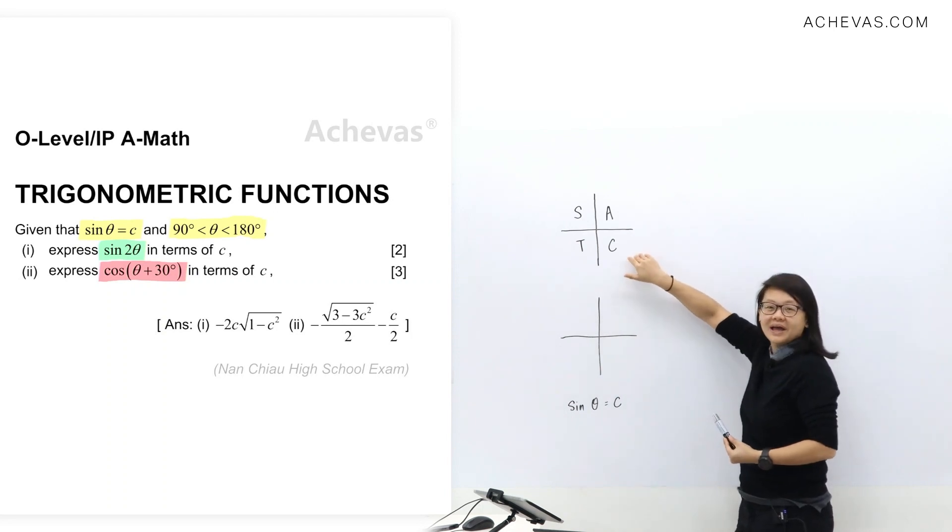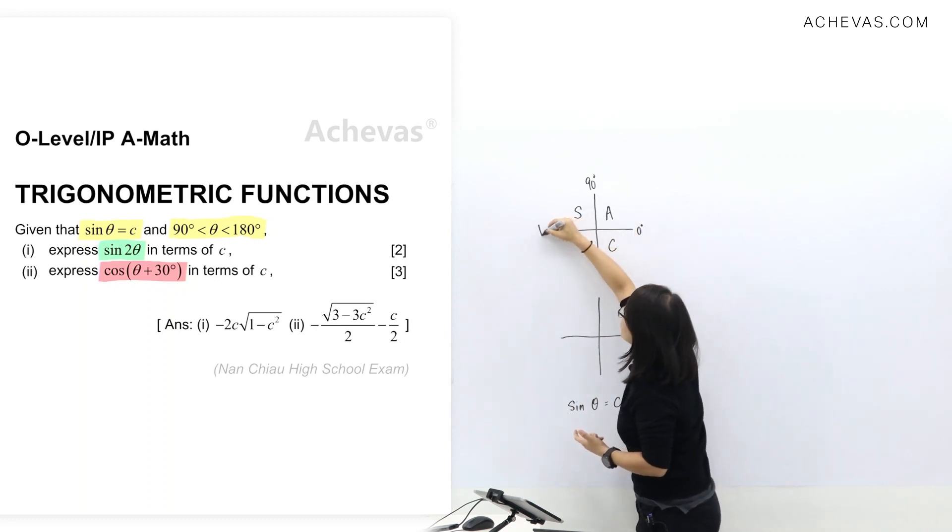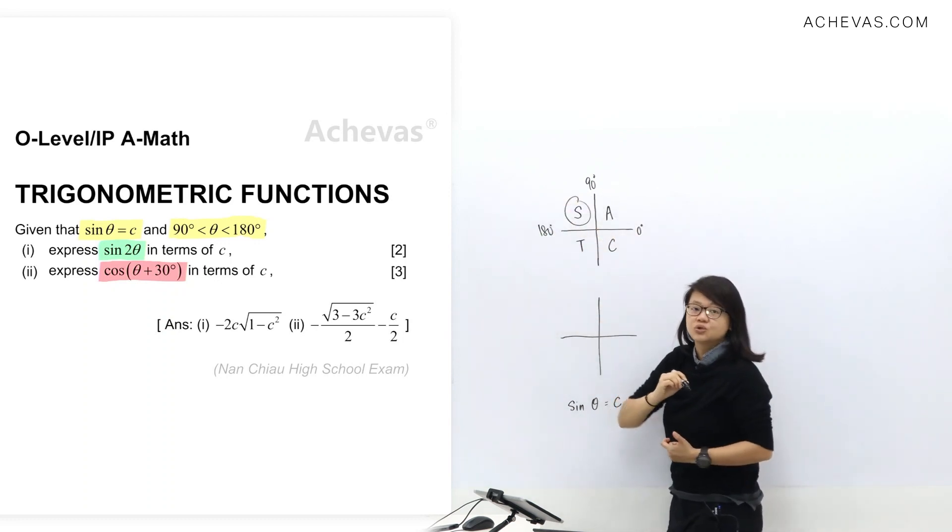So I'm first going to circle where the quadrant is. We have 90 to 180, so this will be 0, 90, 180. So we are in quadrant number 2.